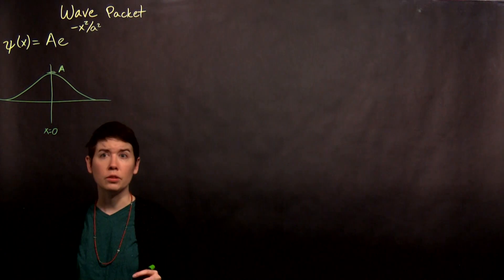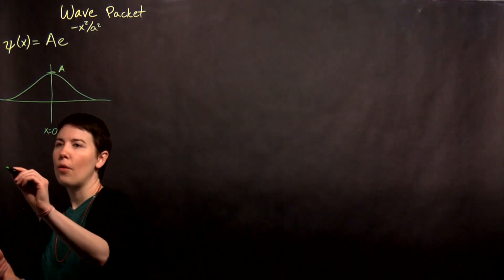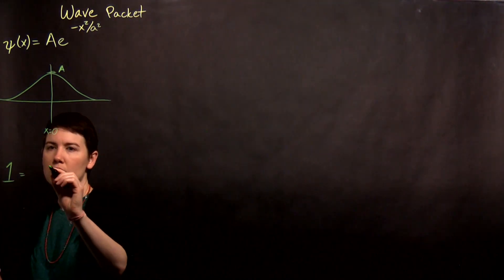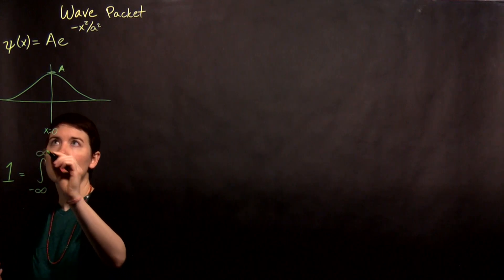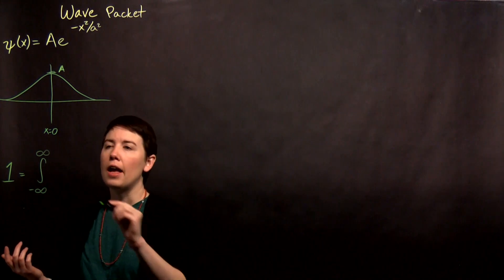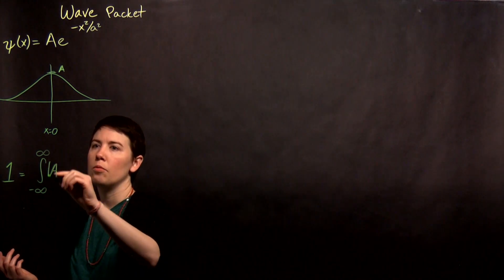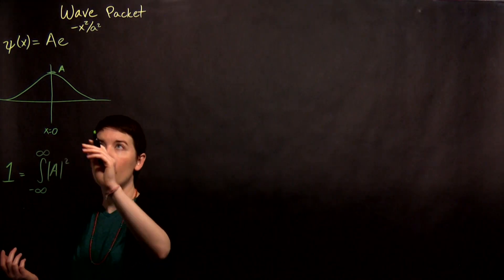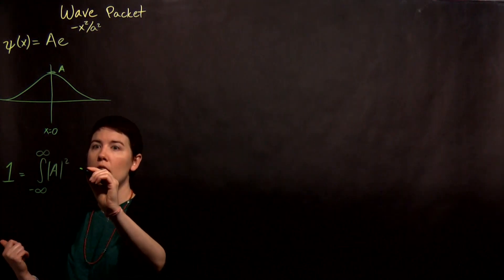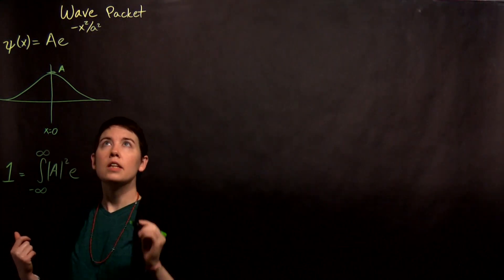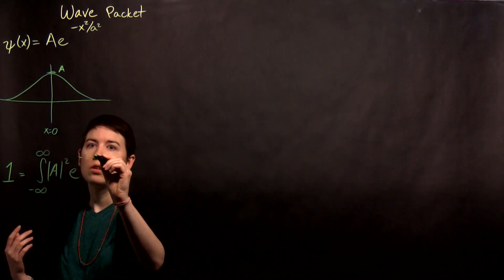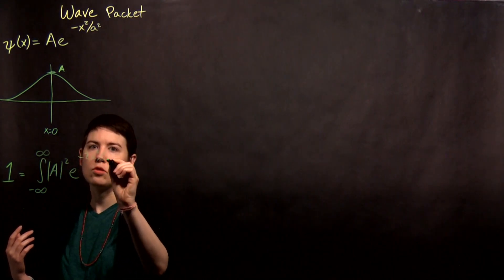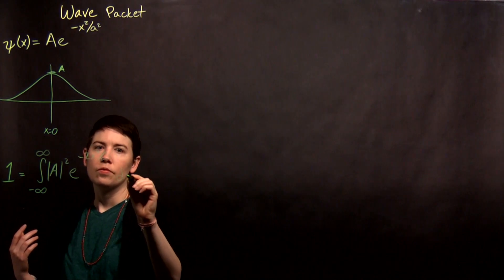So the first thing we need to do, as normal, is normalize this. So 1 is going to be equal to my integral of negative infinity to infinity of psi star psi. And that would be going to be magnitude of a squared coming from the first a star. And then e to the negative x squared over a squared times itself would be negative 2x squared over a squared dx.